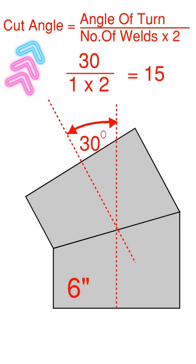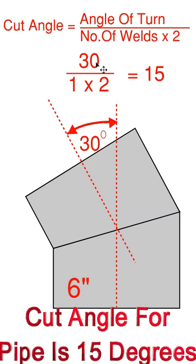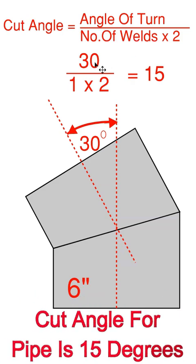With that being said, we need to come up with the cut angle for that pipe. The cut angle is going to equal the angle of turn divided by the number of welds times 2. In this case, 30 is the angle of turn. The number of welds is 1. 1 times 2 is 2. So 30 divided by 2 equals 15.